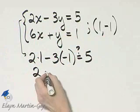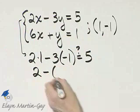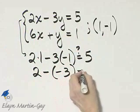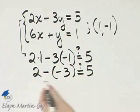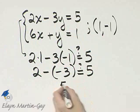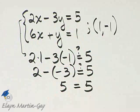Well, 2 times 1 is 2, minus 3 times negative 1, that's negative 3, is that 5? 2 minus a negative 3, that's 5. 5 does equal 5.